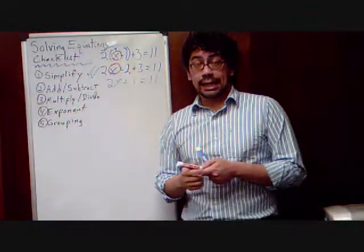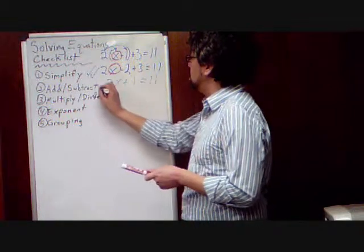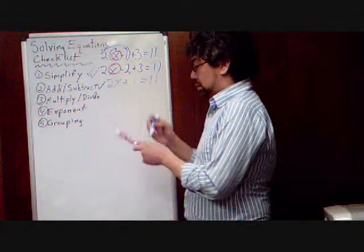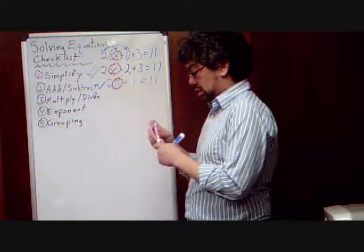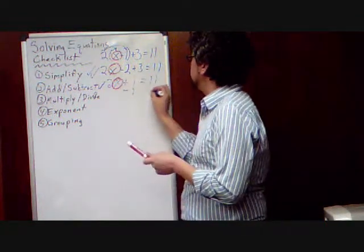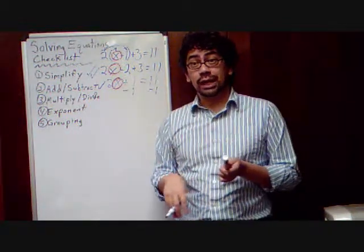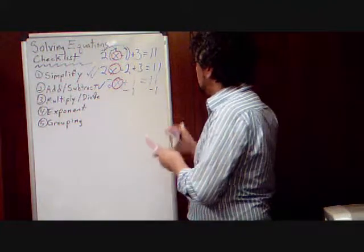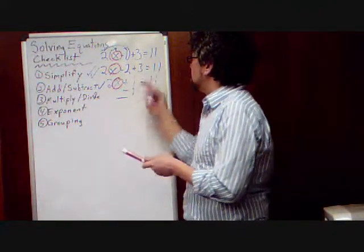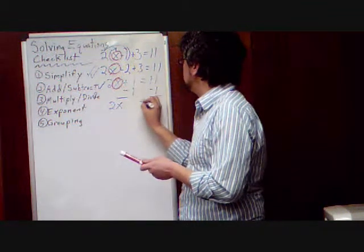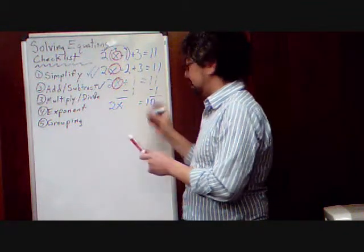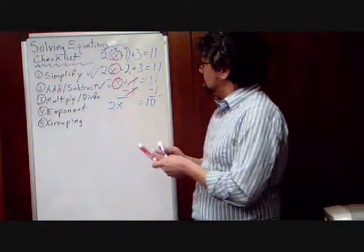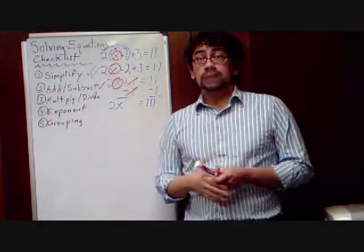So, we can now go to this add-subtract step. We do have adding 1. So, the opposite subtract 1. So, we're going to subtract 1 here and here. Anything we do to one side, remember we have to do to the other side. Keep everything balanced. When we do that, the 1 cancels out here, leaving 2x. 11 minus 1 is 10. Because these 1s cancel out. So, are we done with adding subtracting? Yes, we are.